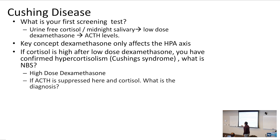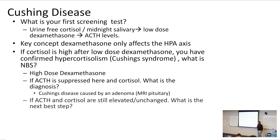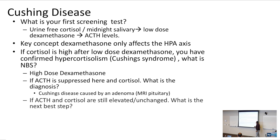The diagnosis here is Cushing's disease caused by an adenoma — get an MRI of the pituitary. If you get a high-dose dexamethasone test and ACTH and cortisol levels are still elevated or unchanged, the next best step is getting a CT chest, abdomen, and pelvis. That's where you look at the laboratory abnormalities that the USMLE can give you.